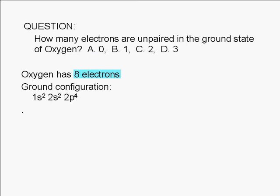Oxygen has 8 electrons, so its ground state configuration is 1s2, 2s2, 2p4.